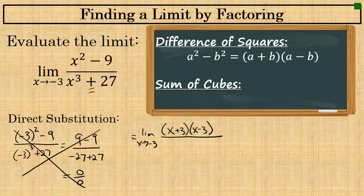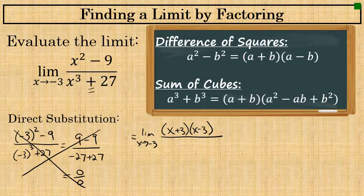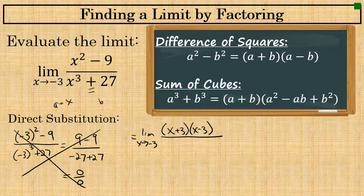The formula for factoring a sum of cubes a cubed plus b cubed is a little more complicated: a plus b times the quantity a squared minus ab plus b squared. In this situation, a equals x and b equals 3, because 3 to the third power is 27.